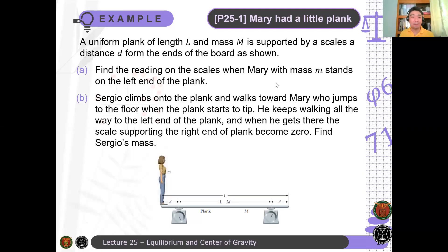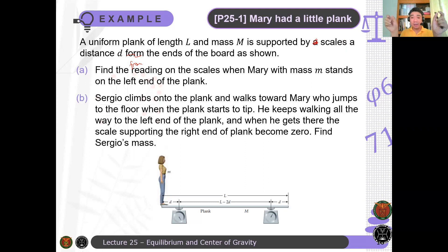Let's have an example. Mary had a little plank. A uniform plank of length L and mass M is supported by scales a distance D from the ends of the board as shown. Find the reading on the scales when Mary, with mass m, stands on the left end of the plank. The masses of both are so large that the object will tip over — it can no longer be in static equilibrium.